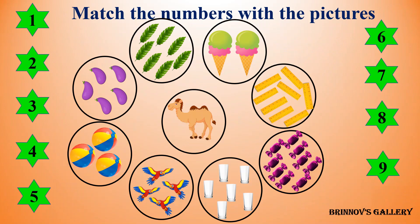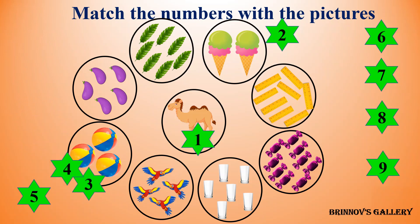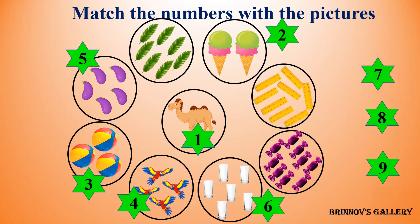Match the numbers with the pictures. 1, 1 camel. 2, 2 ice creams. 3, 3 balls. 4, 4 buds. 5, 5 brinjals. 6, 6 glasses. 7, 7 leaves. 8, 8 scales. 9, 9 chocolates.